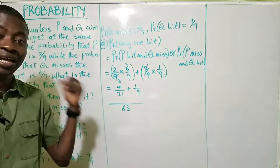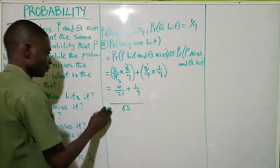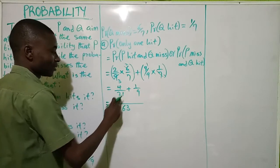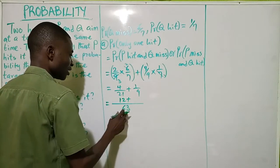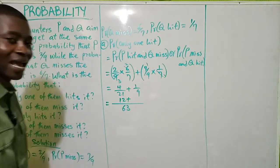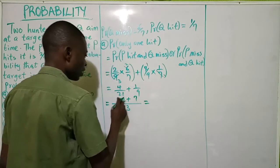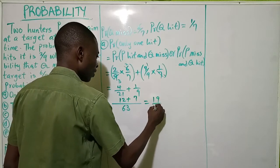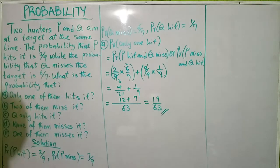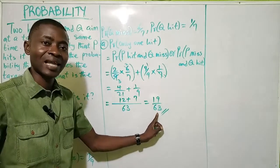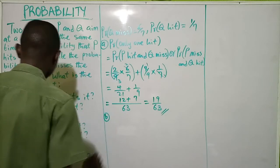So 12 plus 7 gives us 19 over 63. So the probability that only one of them hits the target is 19 over 63.